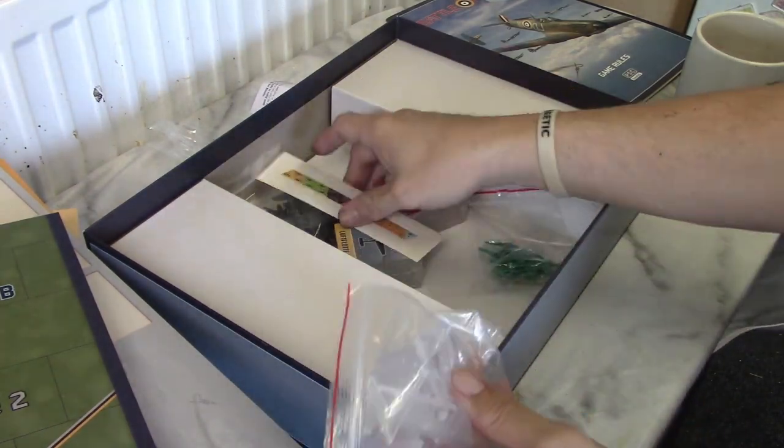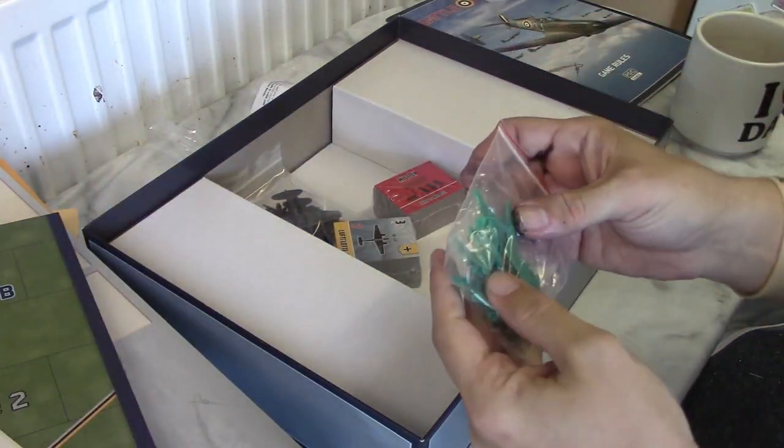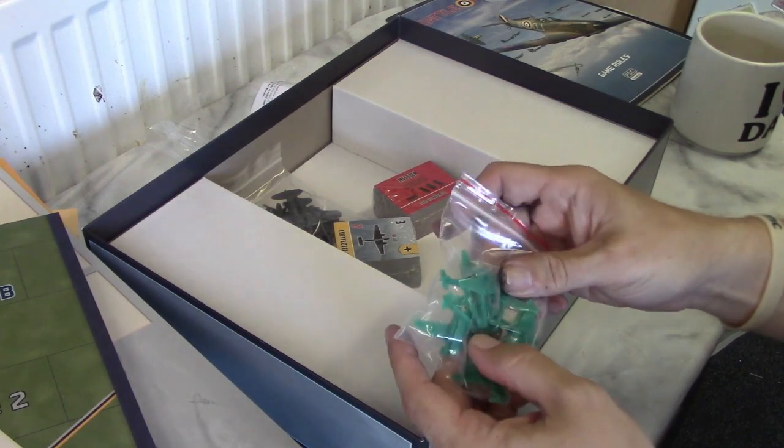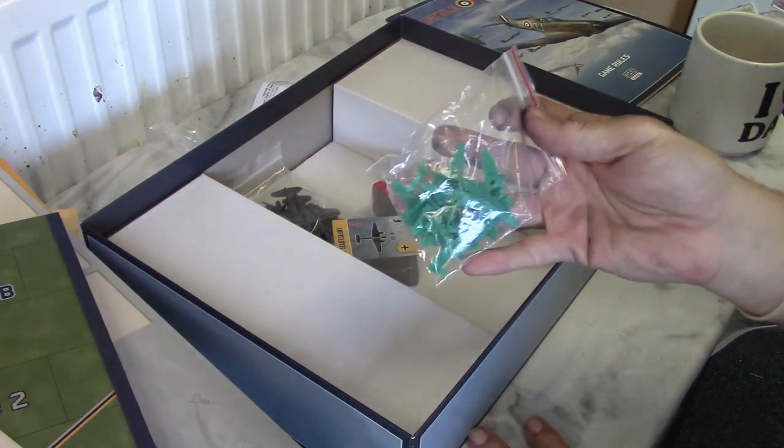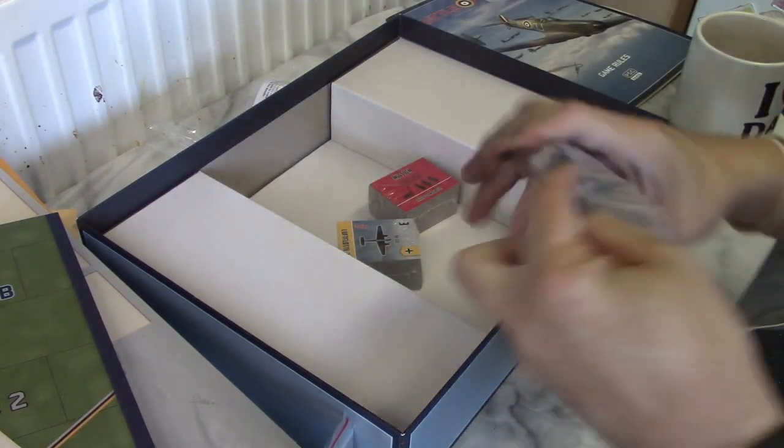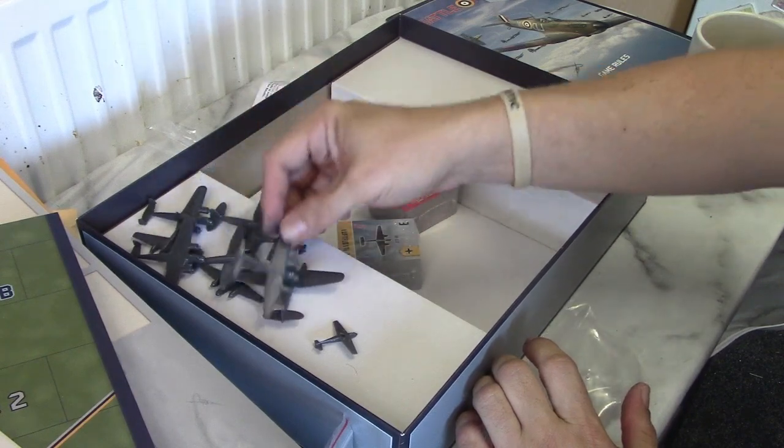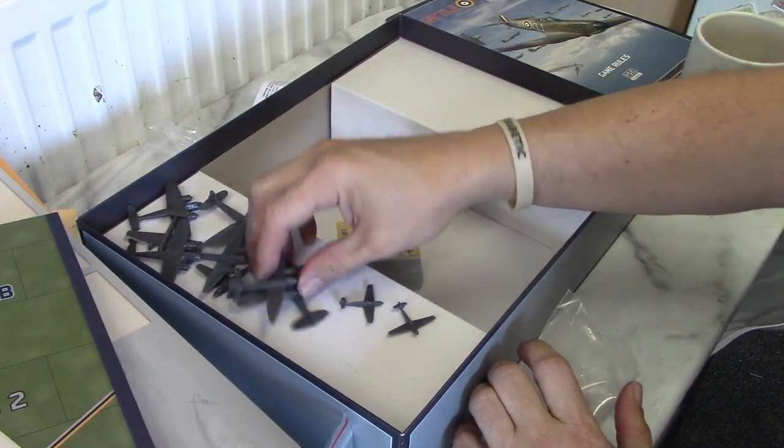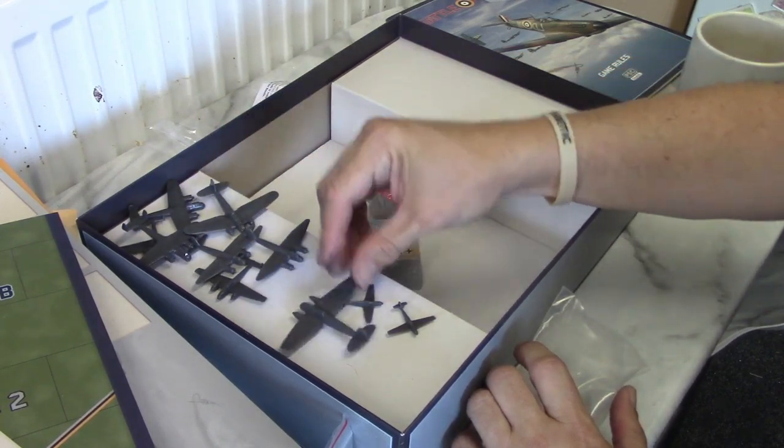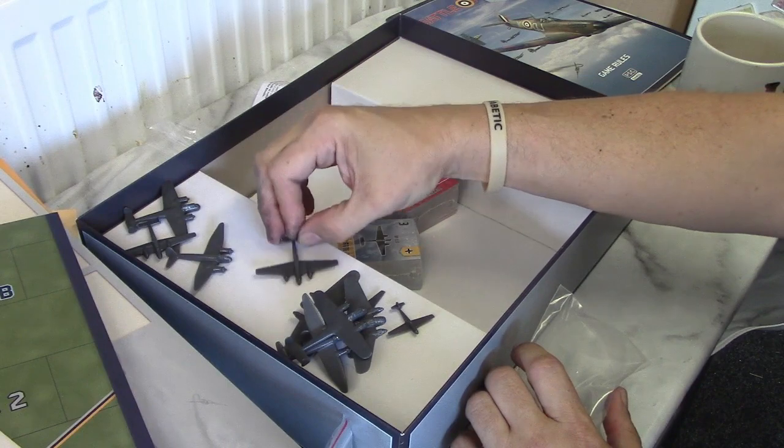You've got the dice - I'll look at how they're used in a minute - but you've got British dice which are white and German dice which are black. I'll explain why there's different ones. We've got the aircraft stands complete with the stickers to put on them. And we've mentioned aircraft, so we get the different aircraft. Now the British, you get Spitfires. I appreciate that a lot of the aircraft in the Battle of Britain were Hurricanes and so on, but the Spitfires represent them well enough.